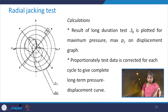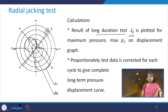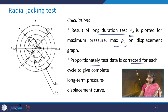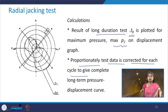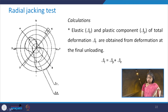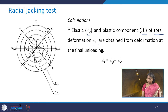The result of the long-duration test — that is delta d — is plotted for the maximum pressure p2 on the displacement graph. Proportionately the test area is corrected for each cycle to give the complete long-term pressure-displacement curve. The elastic and plastic components are part of the total deformation.